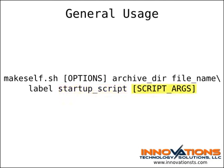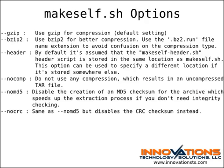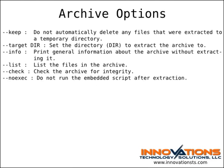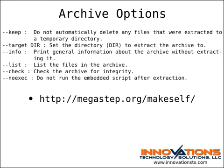In turn, this script can have arguments passed to it, represented by script_args. It's important not to get the arguments to the startup script confused with the arguments to makeself.sh. Here are some of the options for use with makeself.sh. You can find a comprehensive list on the makeself.sh webpage, but in my own experience I'm usually only concerned with the options listed here. In addition to the options passed when creating the archive, there are options you can pass to the archive itself to influence what happens during and after the extraction process — please have a look at the makeself.sh webpage for a full list.